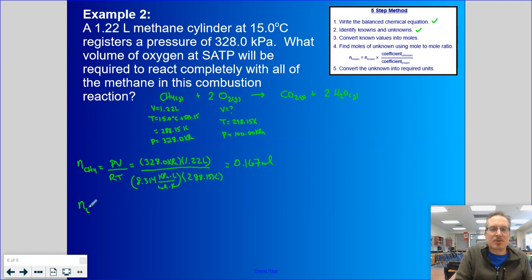And I am allowed 3 sig figs as the question. So my answer is 0.167 moles. I'm now going to find the moles of O2. So I'm going to do the mole ratio step. I'm going to multiply by my unknown 2, divided by my known 1. So take my full calculator number, times by 2 moles, divide by 1 mole. And my answer is 0.334 moles.